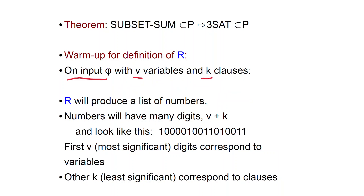R is going to produce a list of numbers. These numbers will have many digits — the number of digits will be v plus k. The first v digits, the most significant ones, are going to correspond to variables. The other k digits will correspond to clauses.